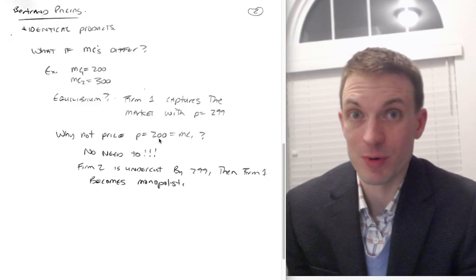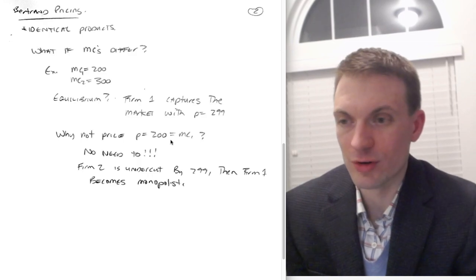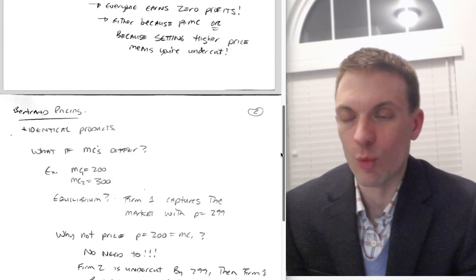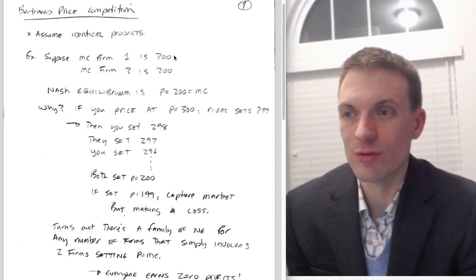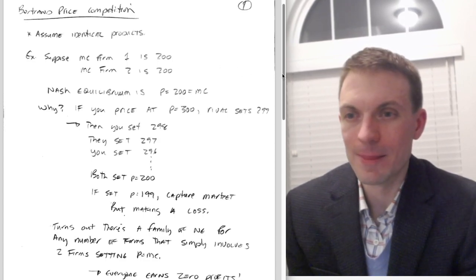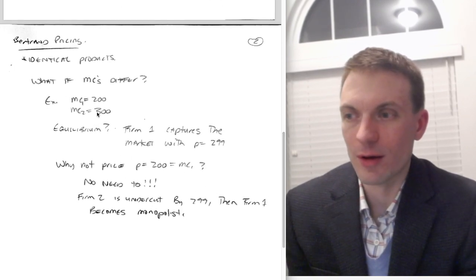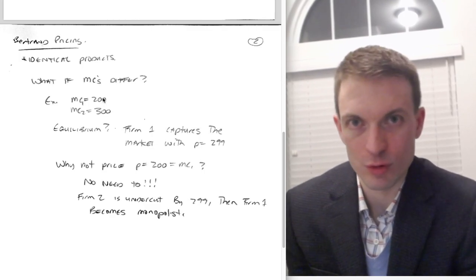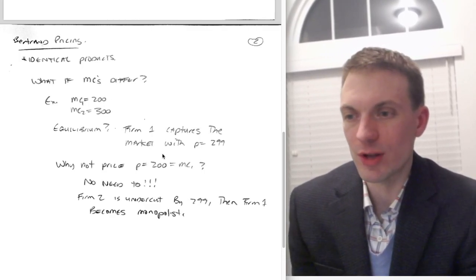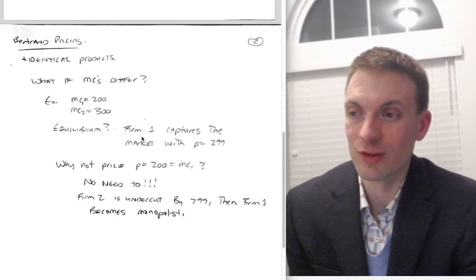So firm one never sets price as low as 200. Why? Because there's no downward pressure in terms of price competition forcing that to happen. Why did that happen here? Well, here they both had marginal cost of 200, so both of them could continue fighting this price war down to price equal to marginal cost of 200. Here, price never actually gets below or doesn't actually get down to firm one's marginal cost, because after it gets below firm two's marginal cost, there's no longer any downward pressure on price. So the equilibria that we'd expect here would be firm one prices as high as it can while remaining a monopolist, while undercutting firm two.